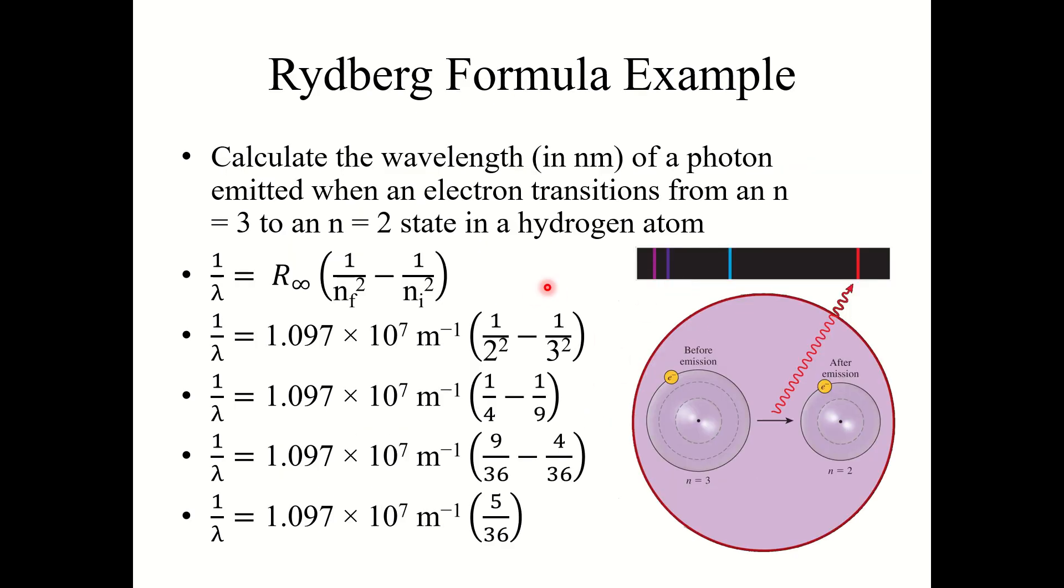Let's look at an example problem. Calculate the wavelength in nanometers of a photon emitted when an electron transitions from n equals 3 to n equals 2 state in a hydrogen atom. So we're going to use the Rydberg formula: 1 over lambda equals r infinity, 1 over nf squared minus 1 over ni squared. R infinity is the Rydberg constant, just plug the constant in.